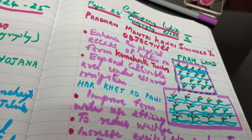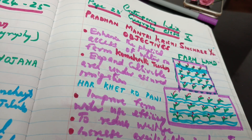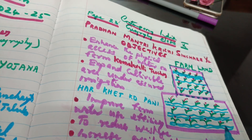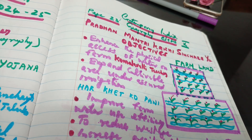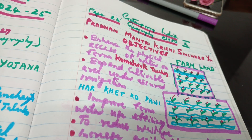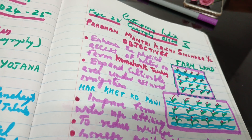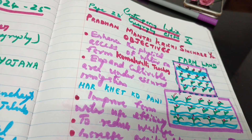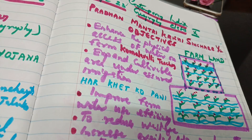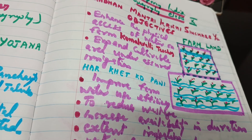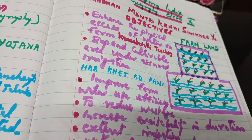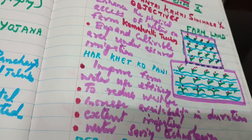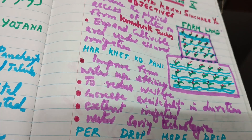Second, to expand cultivable area under assured irrigation — expanding the land area under assured agricultural irrigation. This is called Har Khet Ko Paani.